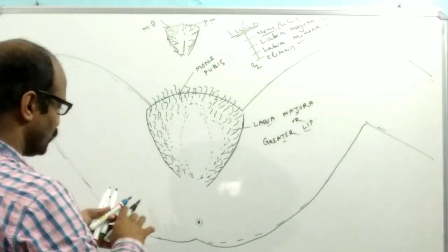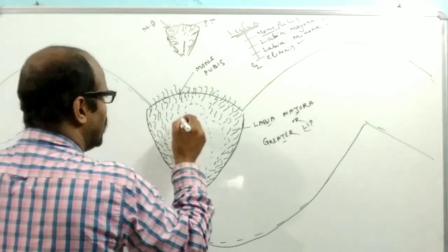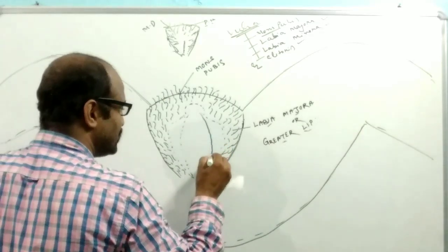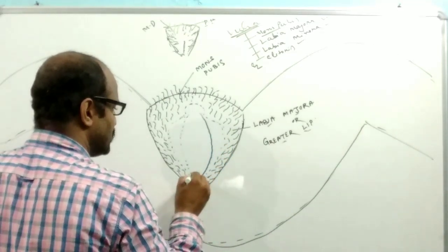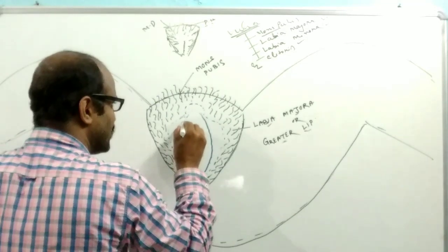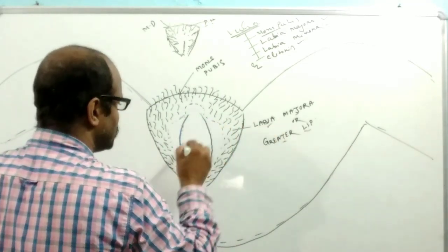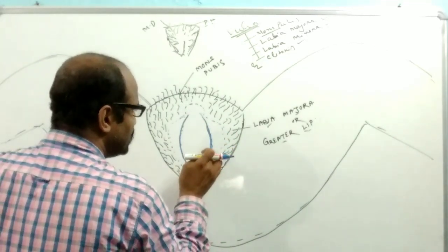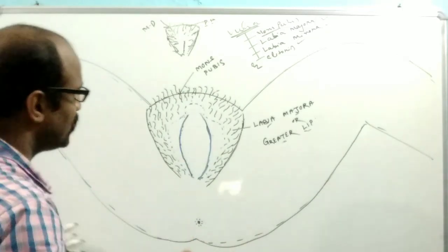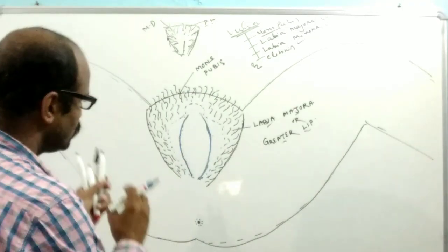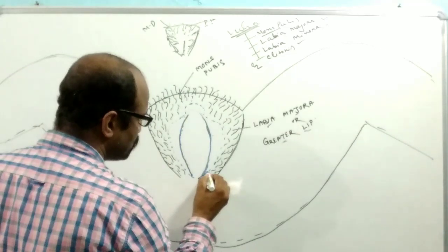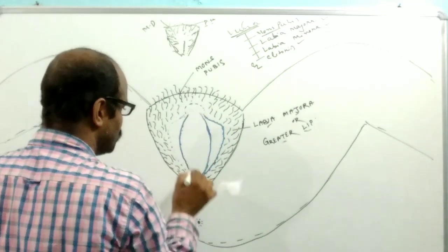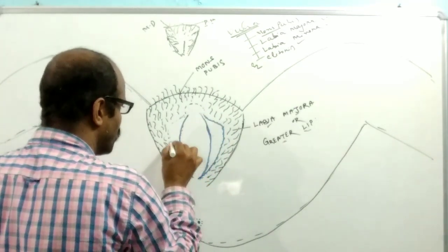In order to the labia majora there is another leaf-like structure — the lesser lip — which is comparatively thin, and that's why it is known as the lesser lip. This lesser lip is smooth on both sides and provided with mucous glands.